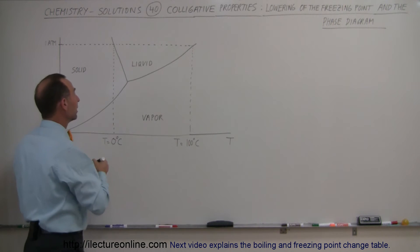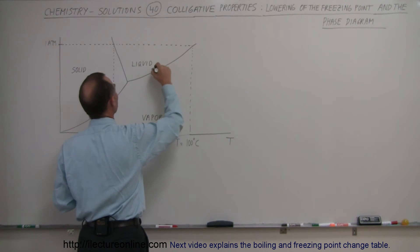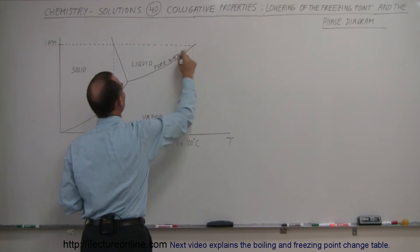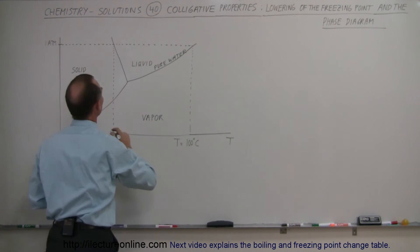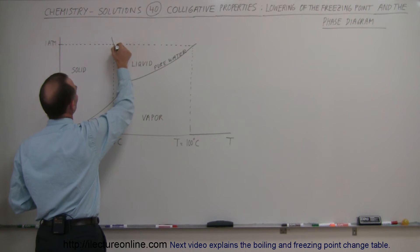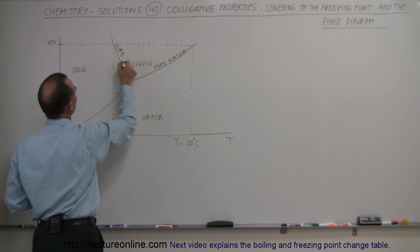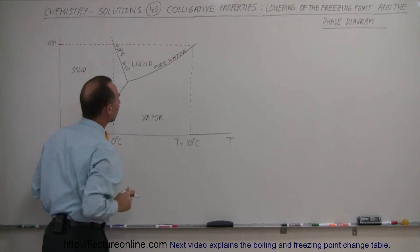What happens then is this would be the curve for pure water—that would be the boundary between liquid and vapor for pure water. And of course this is also pure water right here—pure water H2O—that would be the boundary between solid and liquid.